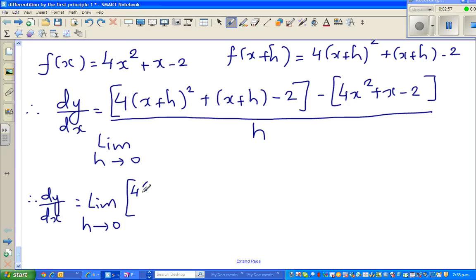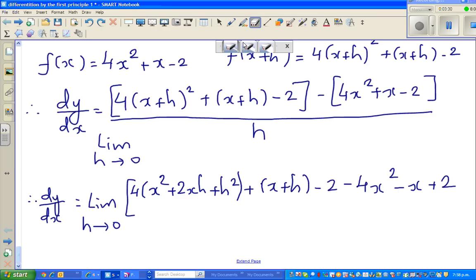So let us expand this. This is 4 times x squared plus 2xh plus h squared, plus x plus h minus 2. I'll open the bracket now.